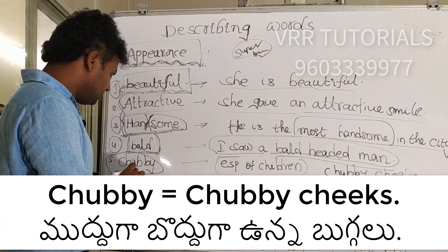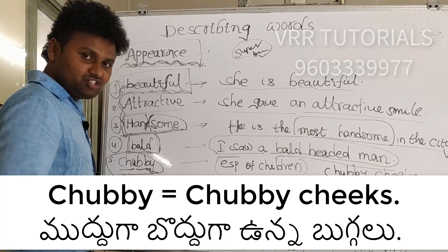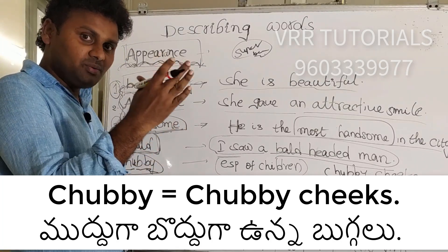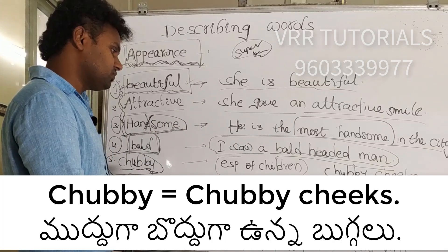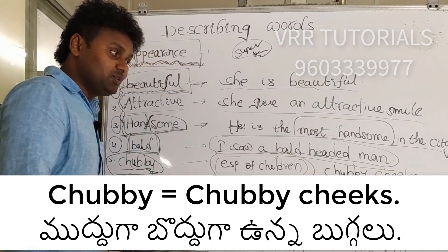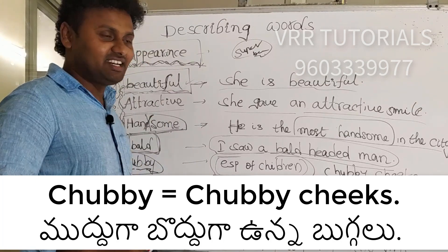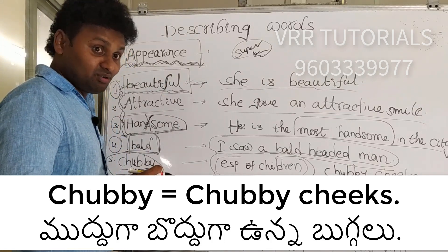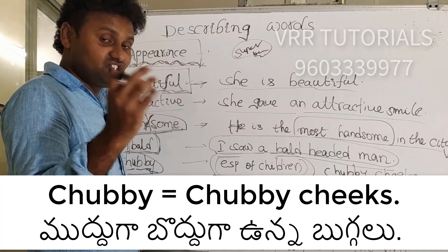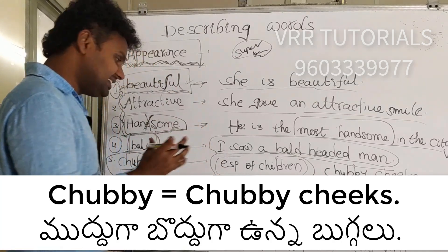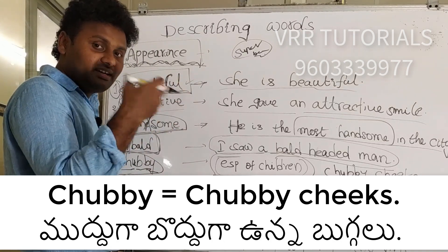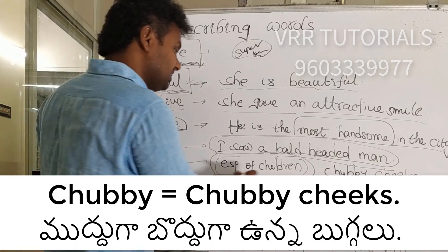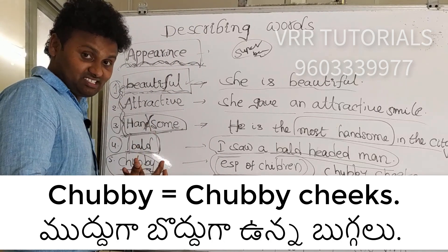The next word is 'chubby' — C-H-U-B-B-Y. Chubby is not a negative word; it means rounded and attractive, not simply 'fatty'. We especially use it for children — for example, 'chubby cheeks'. You can say 'The boy has got chubby cheeks.' It describes someone with an attractive, rounded, clear appearance.